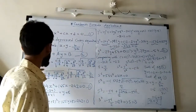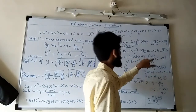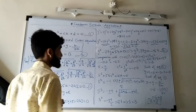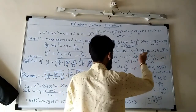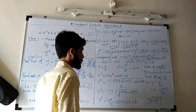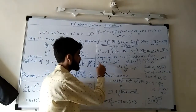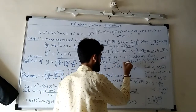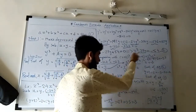Now we have the depressed cubic. We compare our equation with the identity (s+t)³ minus 3st(s+t) equals s³ plus t³, where s plus t is a root of equation number 2. Comparing, we find that minus 3st equals minus 27, so st equals 9, and s³ plus t³ equals minus 54. From st equals 9, we get t equals 9 over s. Substituting the value of t into the equation, we get an equation in s.